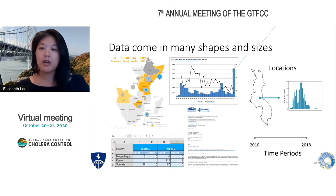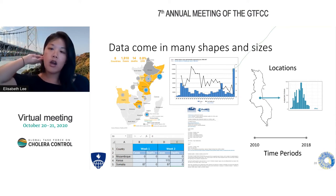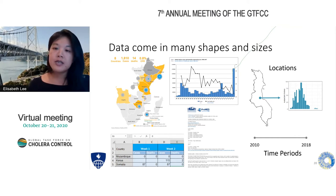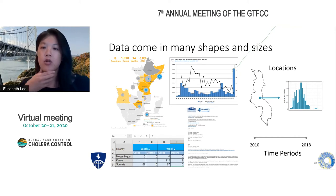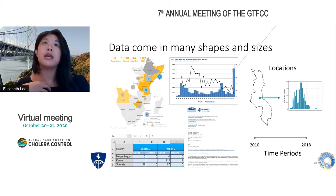The primary way that we are organizing this database is through linking observations of cholera incidence — suspected cases, confirmed cases, and deaths — to specific locations over specific time periods. Through that organizing principle, we can bring together lots of different types of information into a single place.